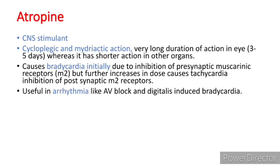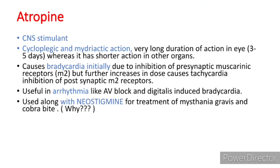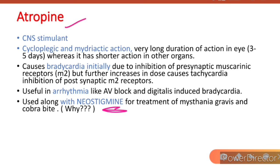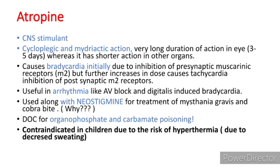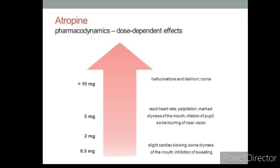Atropine is useful in arrhythmias like AV block and digitalis-induced bradycardia. It is used along with neostigmine for the treatment of myasthenia gravis and cobra bite — because neostigmine is cholinergic, atropine is given to compensate for the increased cholinergic effects. Atropine is the drug of choice for organophosphate and carbamate poisoning. It is contraindicated in children due to the high risk of hyperthermia from decreased sweating.